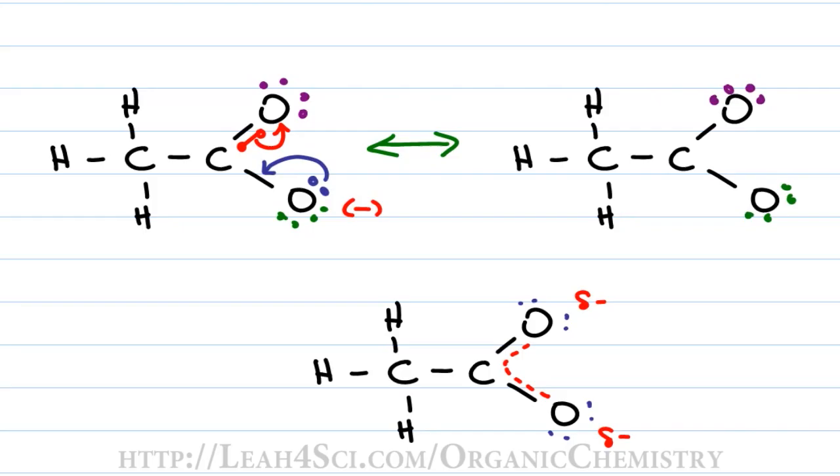The blue electrons on the negative oxygen used to be a lone pair giving oxygen a negative charge. Now it's sitting between carbon and oxygen as a pi bond so we have to show that. The red electrons used to sit here as a bond but we have an arrow demonstrating their collapse onto the top oxygen and that's why we show it here as a lone pair on that oxygen.